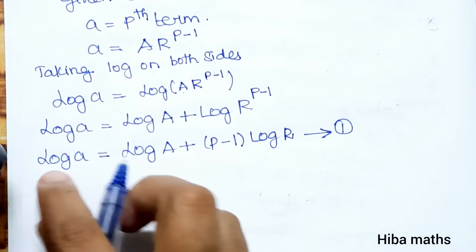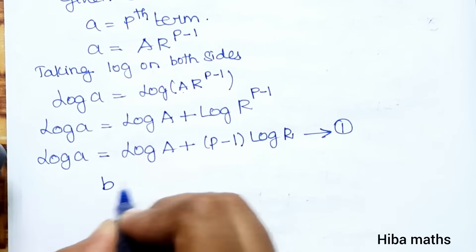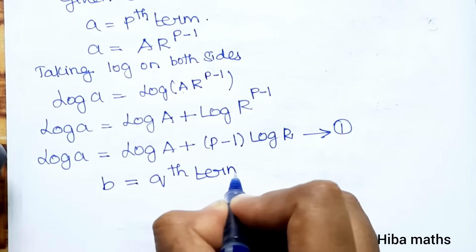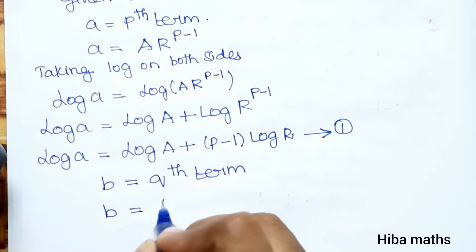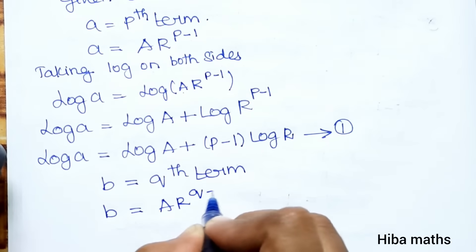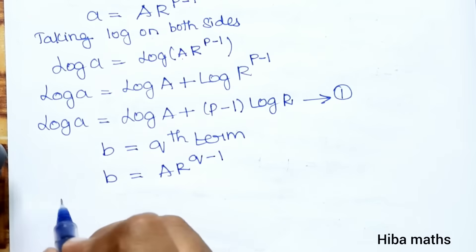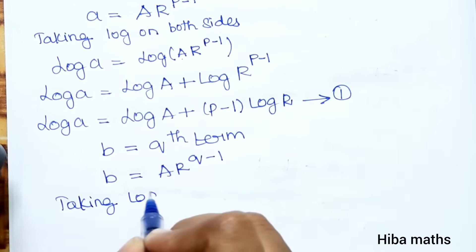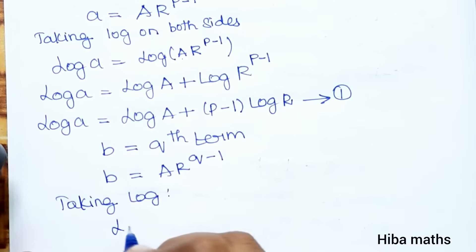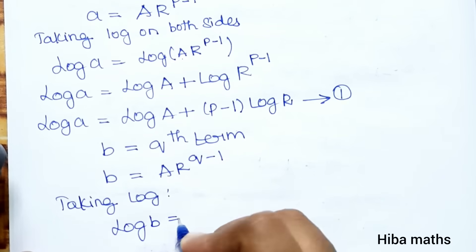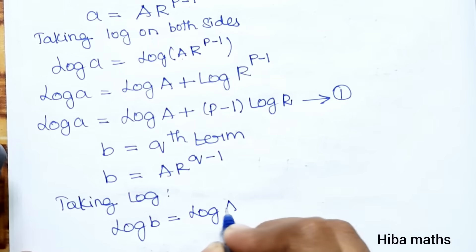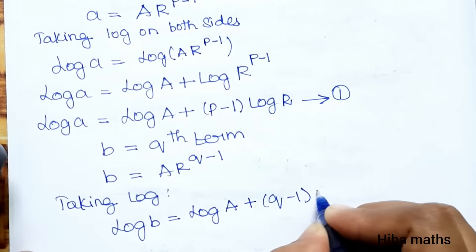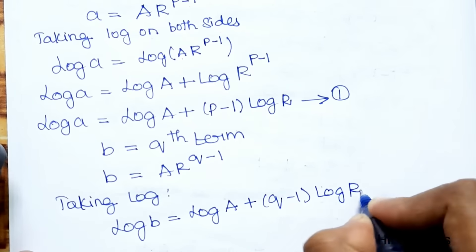Similarly, B is equal to the Qth term. The Qth term gives us log B equals log A plus (Q minus 1) into log R.